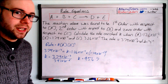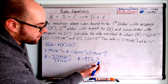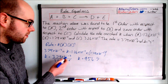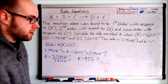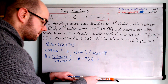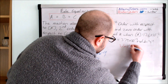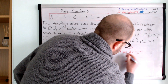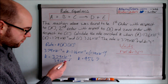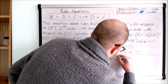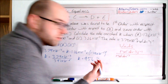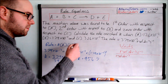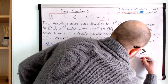You also get marks for writing the units of k, and you can work them out simply. k doesn't always have units, but in this case it does. Looking at the rearranged equation, we write the units of rate — mol dm⁻³ s⁻¹ — on top, and the units of concentration for [A] (mol dm⁻³) and [B]² on the bottom. Because B is squared, we write mol dm⁻³ twice.